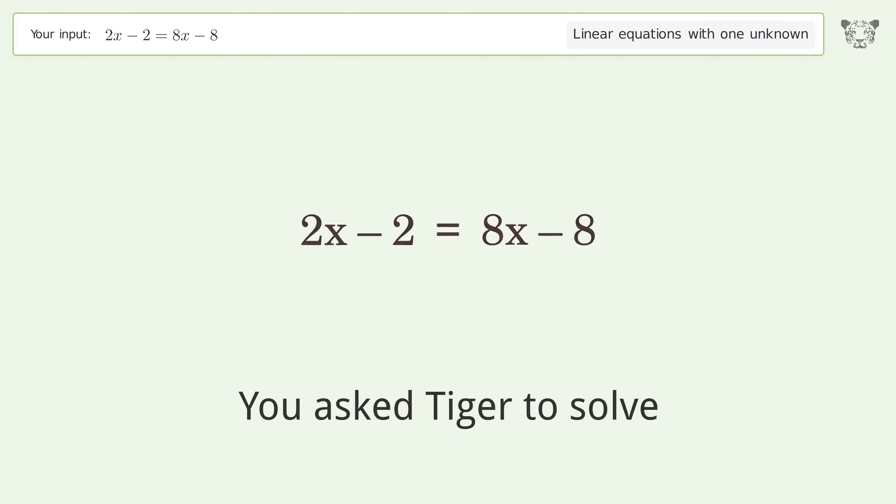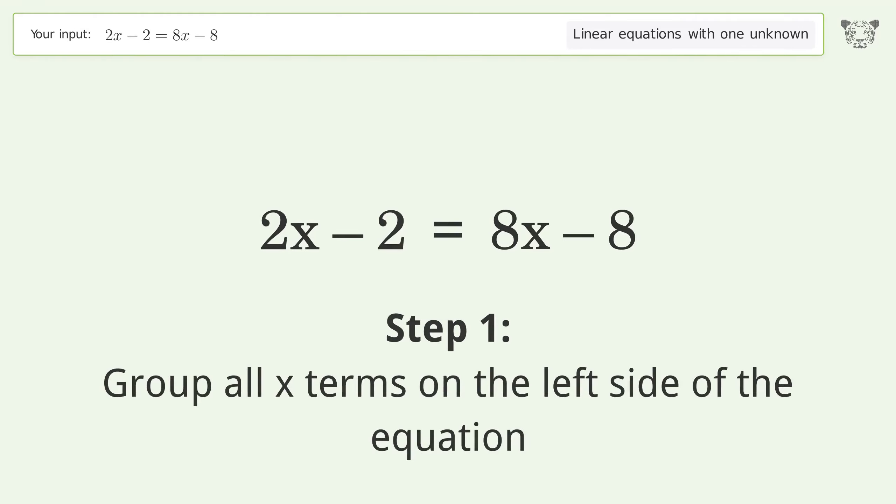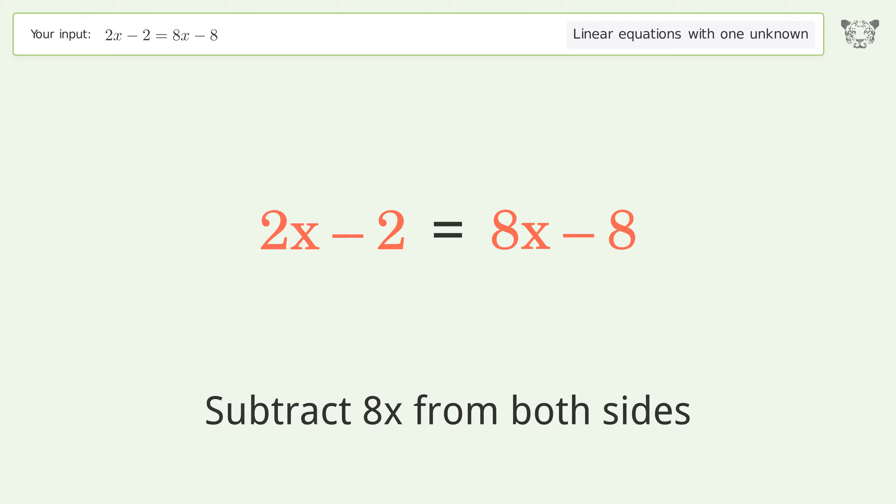You asked Tiger to solve this. This deals with linear equations with one unknown. The final result is x equals one. Let's solve it step by step. Group all x terms on the left side of the equation. Subtract 8x from